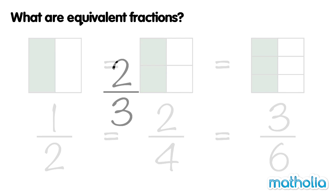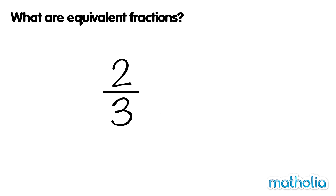To find equivalent fractions, we can multiply the numerator and denominator of a given fraction by a given number. Let's find an equivalent fraction of two thirds. Let's multiply the numerator and denominator by four.